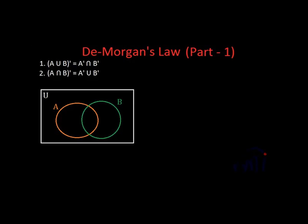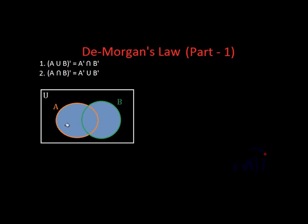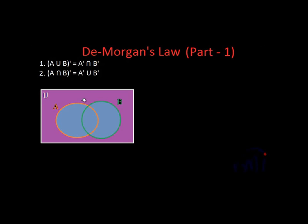You can see one Venn diagram on the screen. The rectangle represents the universal set, the orange circle represents set A, and the green circle represents set B. A union B will be this combined area. The complement of A union B will be the remaining area of the universal set — that means this area outside the union will be the complement of A union B.